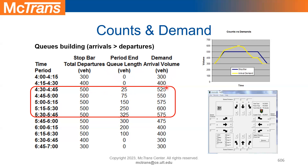Similarly, demand for the second analysis period is 400. In the third analysis period, from 4:30 to 4:45, we see 500 vehicles pass the stop bar, but 25 vehicles are queued up as unserved vehicles. This means we had a demand of 525, of which 500 got served. So capacity is 500, and demand at 525 is higher than both capacity and volume served.